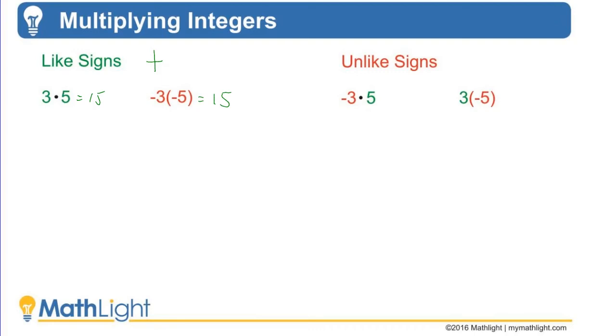We can do 3 times 5. You just got to remember a negative times a negative is a positive. Piece of cake. Well, on the right, you could either have a negative times a positive, that's this first example.